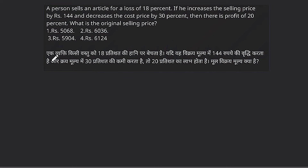Hello students, good evening, welcome back. Our question is: a person sells an article for a loss of 18%. If he increases the selling price by rupees 144 and decreases the cost price by 30%, then there is a profit of 20%. What is the original selling price?